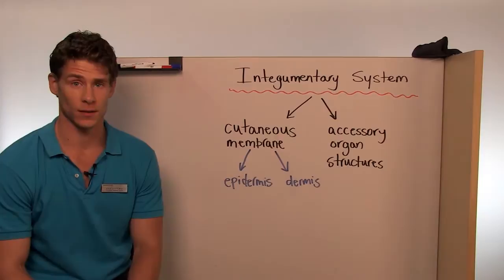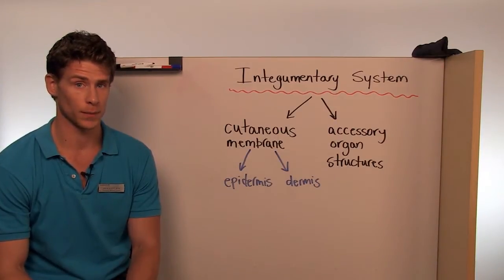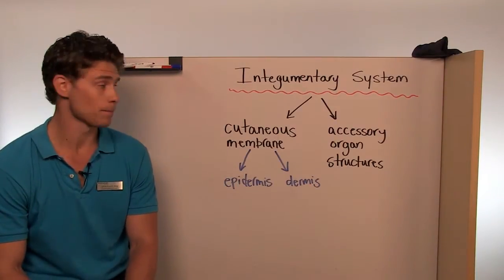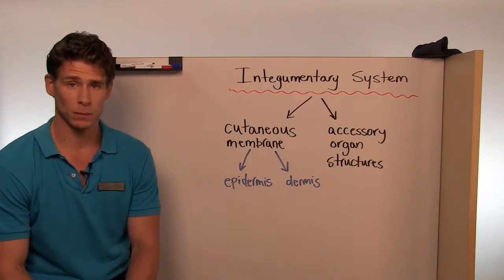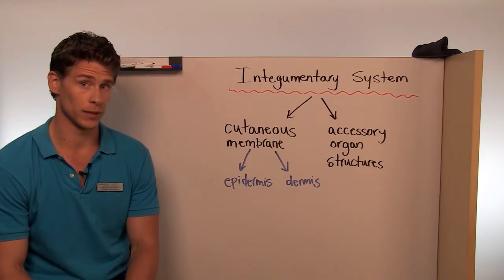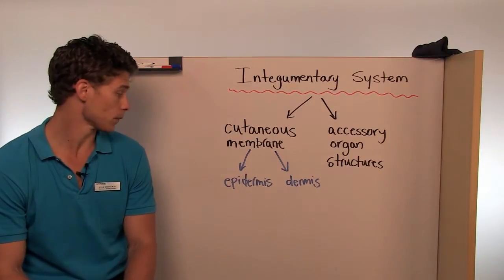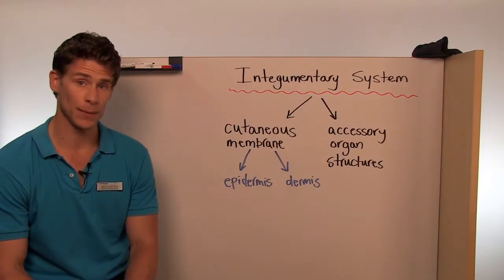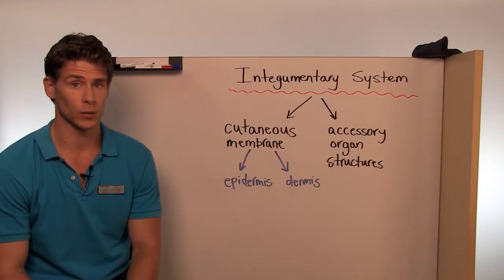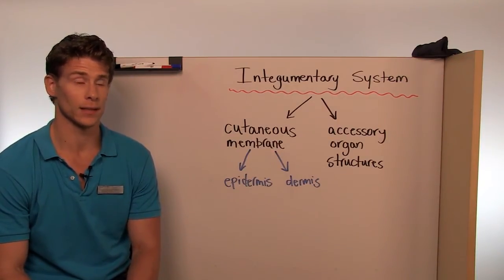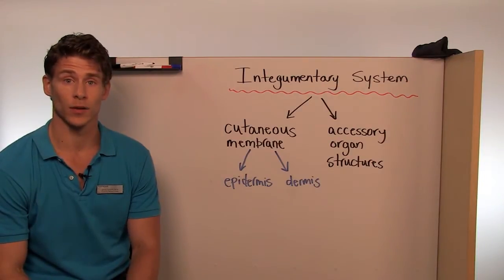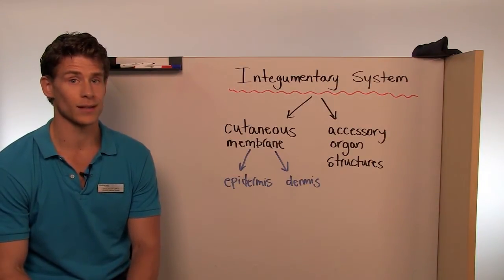The integumentary system is divided into two major parts: the cutaneous membrane and the accessory organ structures. The cutaneous membrane can further be divided into different regions, including the epidermis and the dermis. There is also the hypodermis, which consists of connective tissue and fat tissue, which separates the integumentary system from other organs, but it is not technically considered part of the integument.